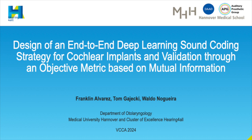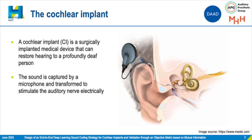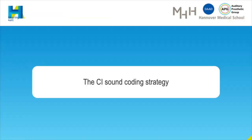So what is a cochlear implant? The cochlear implant, or CI, is a surgically implanted medical device that can restore hearing to a profoundly deaf person. The sound is captured by the microphone and transformed to stimulate the auditory nerve electrically. The algorithm in charge of doing such a process is called the CI sound-coding strategy.